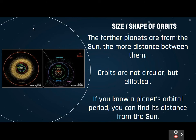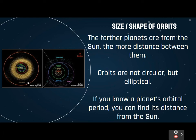The farther the planets are away from the sun, the more distance there is between those planets. The orbits of the planets are not circular — they are elliptical, which just means an oval shape. And if you know a planet's orbital period — how long it takes to go around the sun one time — then you can figure out its distance from the sun using the mathematical equation.